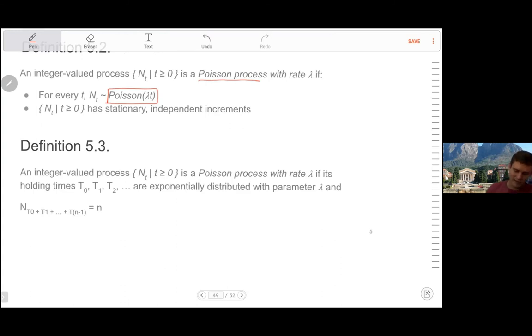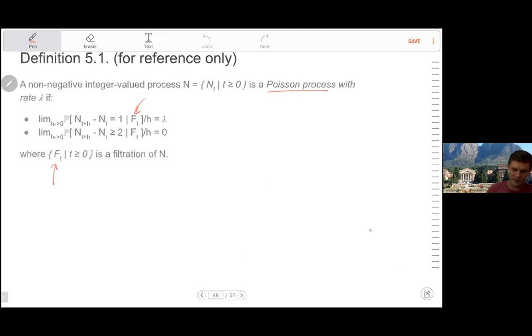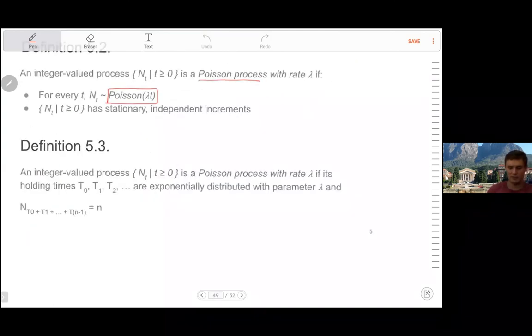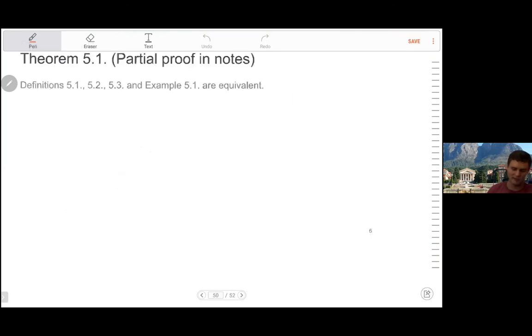Now, all of these definitions, example 5.1, definition 5.1, 5.2 and 5.3, all four of these examples are actually equivalent. They are the same process. And the notes doesn't prove it systematically. It doesn't check.